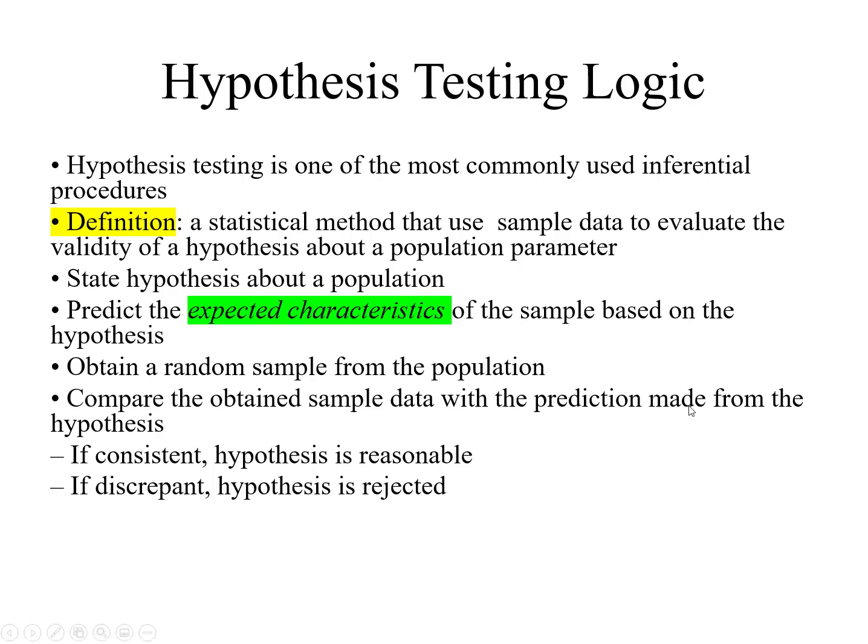Here is a simple example: a person wants to test that a coin has exactly a 50% chance of landing on heads. A coin has two possible outcomes — heads or tails. The person claims there is a 50% chance that when flipped, the coin will land on heads. There are two different types of hypothesis: one is called the null hypothesis and the other is called the alternative hypothesis.